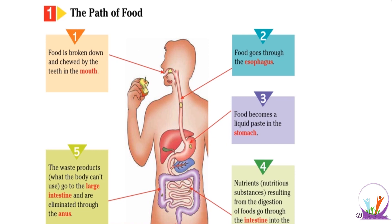What is the pathway of food in the digestive system, and what are the parts of the digestive system? The parts are: number one, mouth; number two, esophagus; number three, stomach; number four, small intestine; and number five, the large intestine.